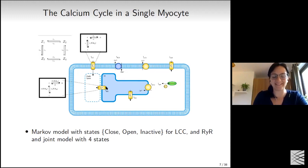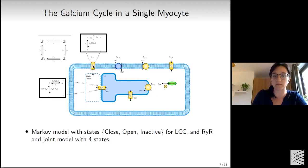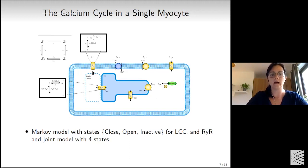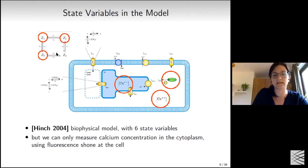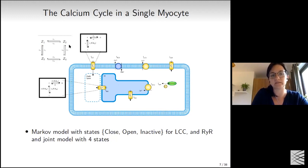Biologists model these proteins using Markov models with three states: open, closed, or inactive, with different transition rates between states. Because transactions happen at different timescales biologically, it's possible to simplify these into a four-state Markov model capturing the interaction of the two key proteins with different transition rates.